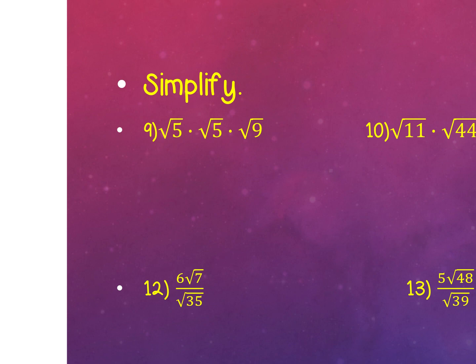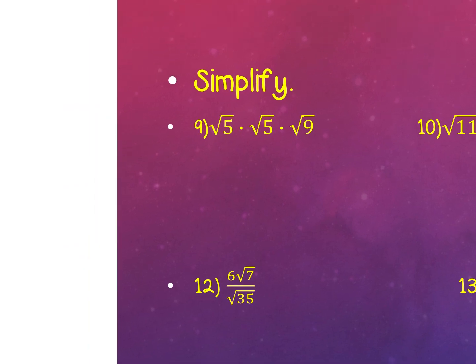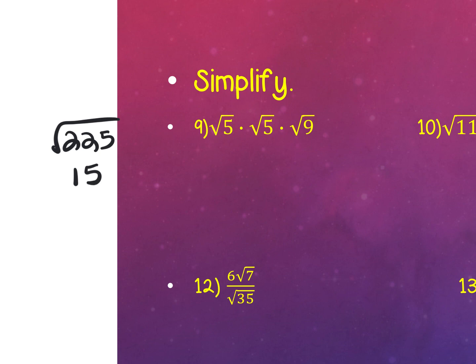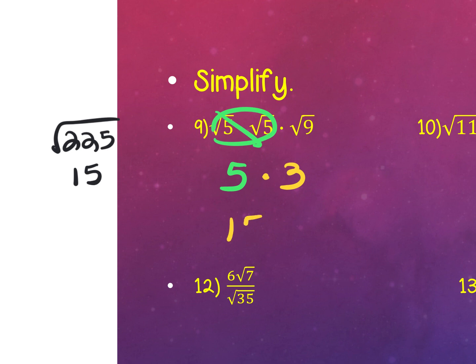For the next one with multiple radicals, I recommend you don't multiply 5, 5, and 9 to get 225 — you might not recognize that as a perfect square. Instead, leave it unmultiplied. I have a pair of 5s, so a 5 comes out. And 9 is a perfect square — square root it to get 3. Then 3 times 5 is 15. Same answer as if you had multiplied through and found the square root.